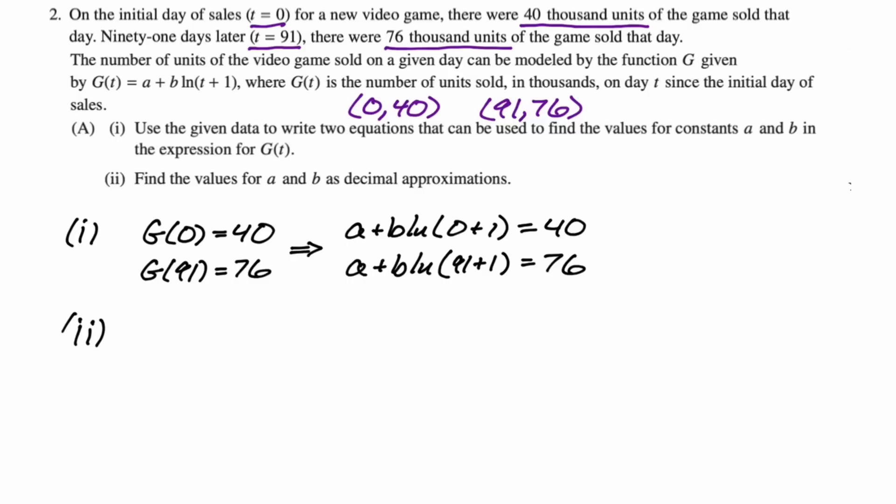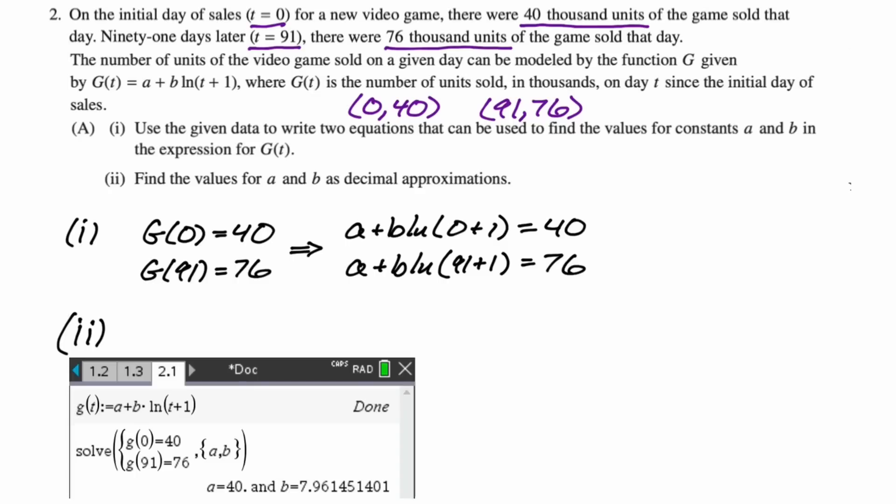For part two, we need to actually find the values of a and b as decimals. I just used solve on the calculator. So here's what that looked like. I defined G(t), and then I just had it solve the system of equations. It gives me my values. So I would write those down three decimal places for b. a is actually exactly 40, so no rounding necessary.